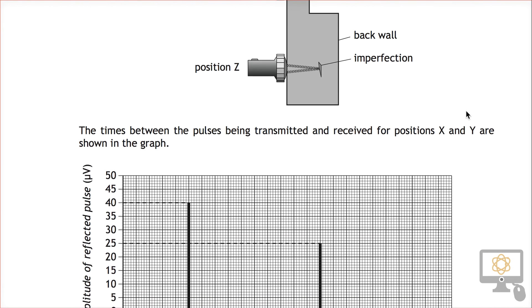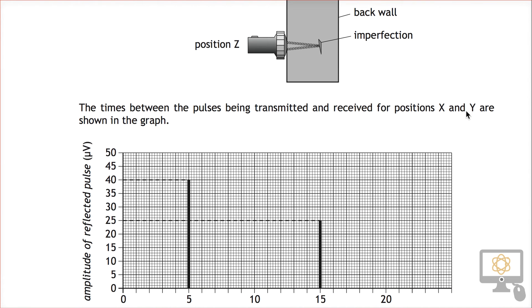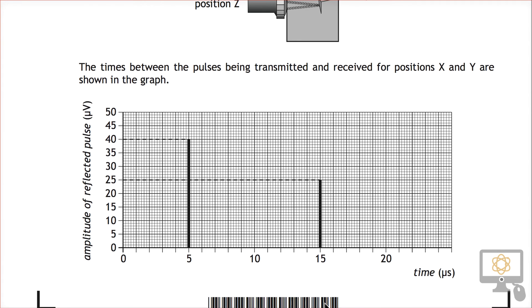Then it shows a graph below. The time between the pulses being transmitted and received for positions X and Y are shown. It doesn't actually tell you which is position X and which is position Y. Let's have a think about this. On the side of the graph we've got amplitude of reflected pulse and time along the bottom.